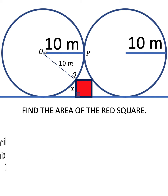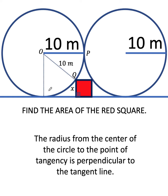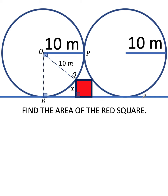Then from the center O, let's draw a perpendicular line segment. Let's call this line segment OR. So we have here a 90-degree angle and another 90-degree angle here. Let's call this point of tangency of the second circle and the horizontal line as point T. Then from point Q, let's draw another line segment that is parallel to RT and perpendicular to line segment OR at point S. Now since the height of our red square is x, it follows that SR also has a length of x units, because we have here a rectangle where opposite sides are equal.